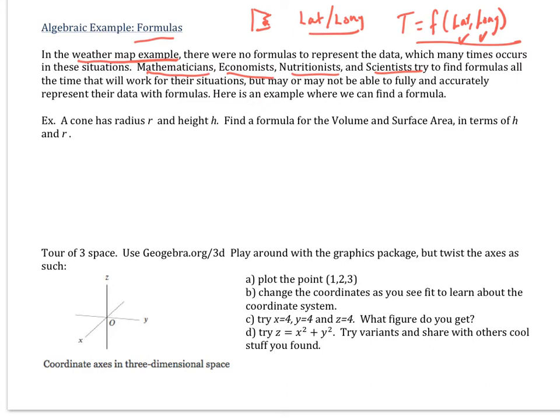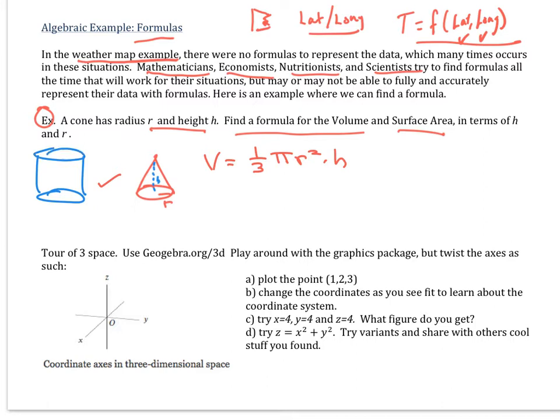So here's an example where we can find a formula for a cone. We want to represent the volume in R and H, and we want to do the surface area in R and H as well. And so here's a picture of our cone, and you know that the volume is one-third of what you would have for its corresponding cylinder. Cylinder is pi R squared H, because remember that if we have a cylinder like this, it's a loaf of bread principle.